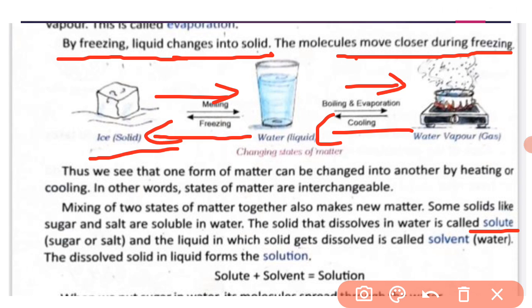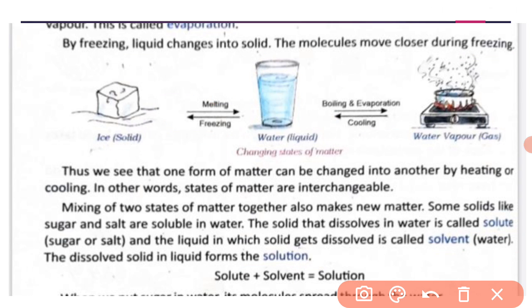The liquid in which the solid gets dissolved is called the solvent. Here water is the solvent in which sugar and salt dissolve. The dissolved solid in liquid form is called the solution. So: solute plus solvent equals solution.